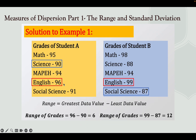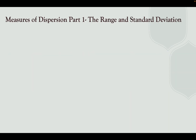The range of the grades of Student A is 96 minus 90, which is 6. In Student B, the highest data value is 99 in English, and the least value is 87 in Social Science. So we have 99 minus 87, which is 12. That's how you find the value of the range.